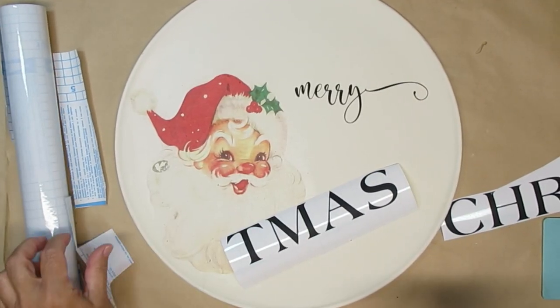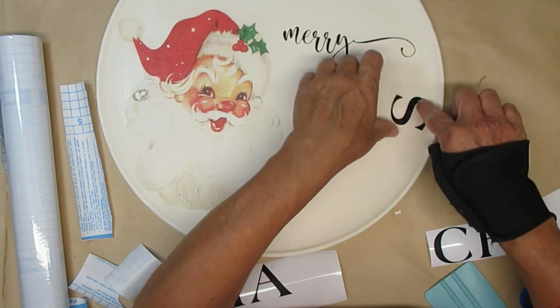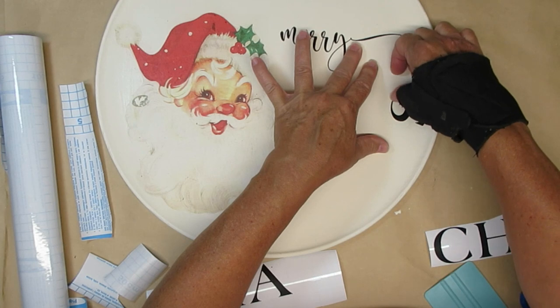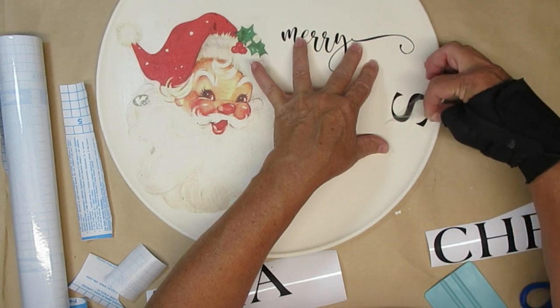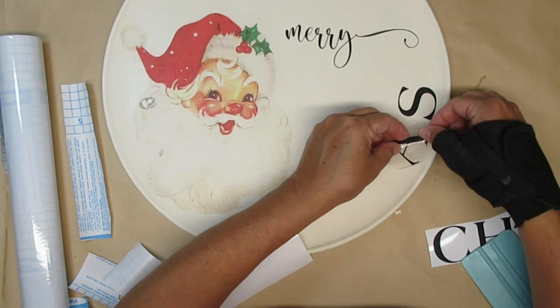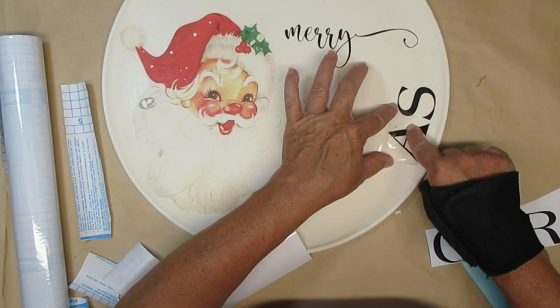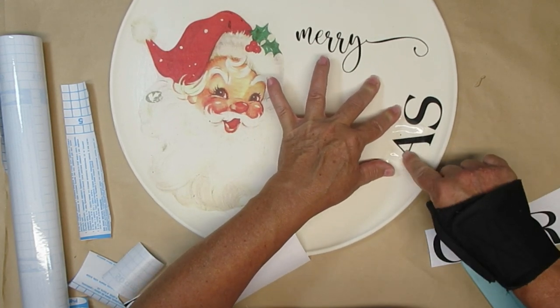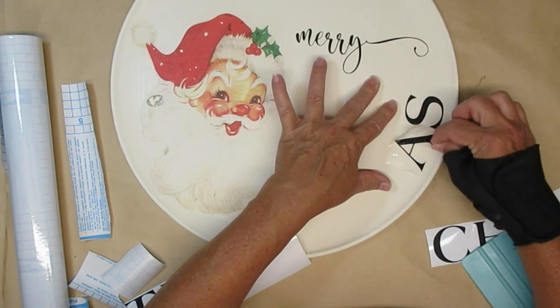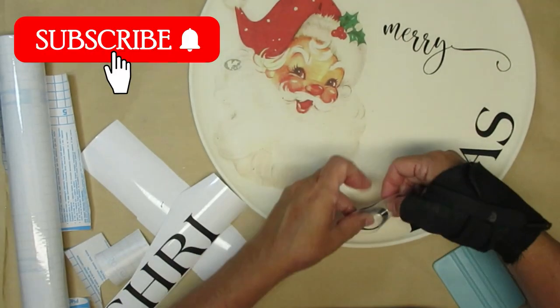I used my Cricut to cut out Merry and then Christmas in two different styles of fonts. What I want to do is create a curved Christmas starting on the lower portion of Santa's beard and going all the way up to the Merry. If you can't find a large pizza pan like this you could definitely use one of the wood rounds that you can pick up at Walmart or at the Dollar Tree. I just don't have access to any of these so I thought this would be a great substitute.